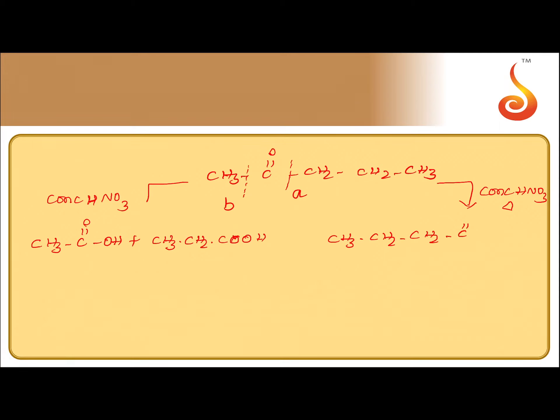If bond B is cleaved, the C=O group goes with the propyl group, giving CH3CH2CH2COOH (butanoic acid). The methyl group gives formic acid (HCOOH). So bond B cleavage gives a mixture of butanoic acid and formic acid.